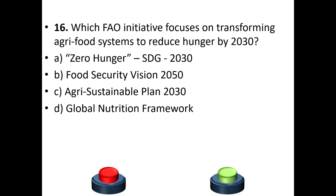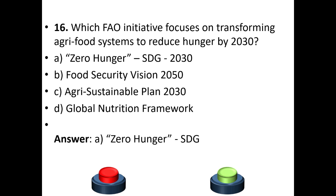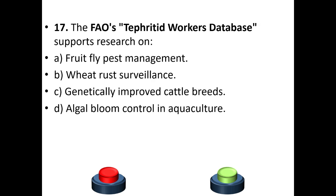Question 16: Which FAO initiative launched in 2016 addresses antimicrobial resistance in agriculture? Wait — which FAO initiative focuses on transforming agri-food systems to reduce hunger by 2030? Options: a) Zero Hunger SDG 2030, b) Sustainable Development Goal 2030 Food Security Vision, c) Agri Sustainable Plan 2030, or d) Global Nutrition Framework. The answer is option A — Zero Hunger SDG 2030.